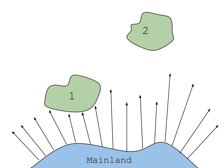Immigration and emigration are affected by the distance of an island from a source of colonists, the distance effect. Usually this source is the mainland, but it can also be other islands. Islands that are more isolated are less likely to receive immigrants than islands that are less isolated.